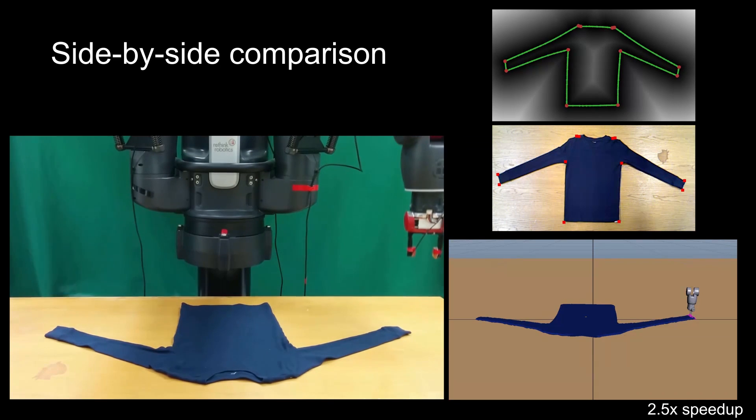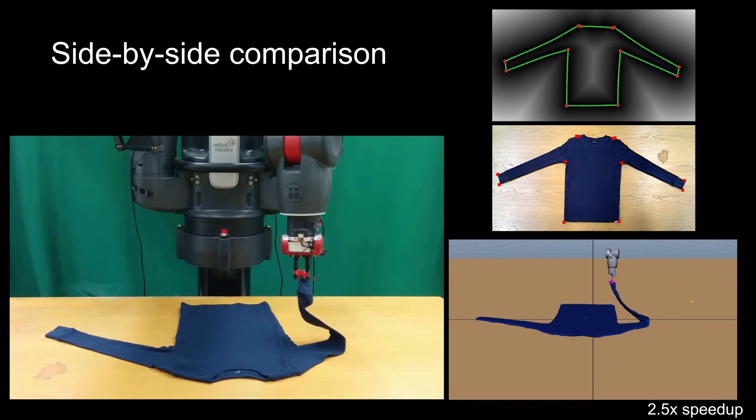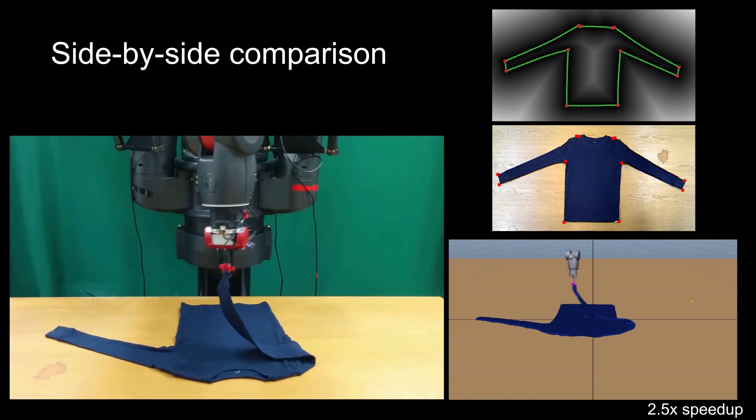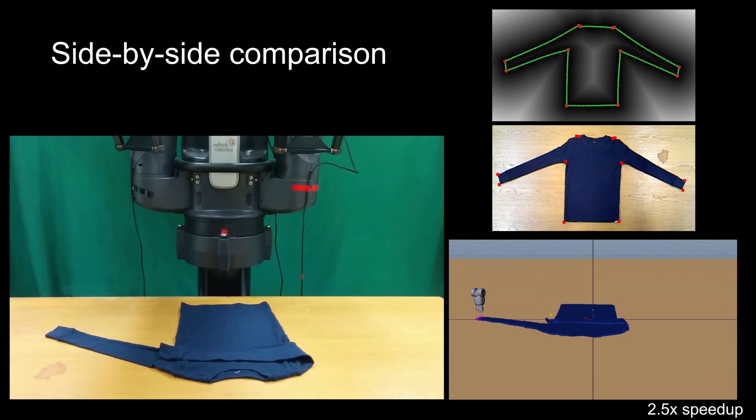We demonstrate that our two-armed robot can follow the optimized trajectories, achieving accurate and efficient manipulations of deformable objects such as a t-shirt, a pair of pants, and a towel. We also show detected contour and key points for each garment.